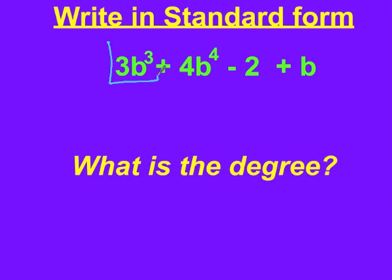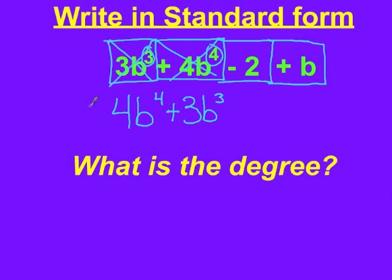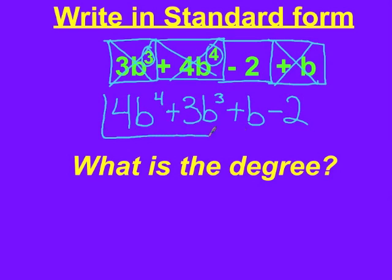Let's look at one more. Box the terms off and leave the adding or subtracting sign in front to determine if each is positive or negative. Our highest degree is 4, so we write positive 4b to the fourth. Our next highest is 3, so plus 3b cubed. Constants always go last, so the next term is plus b, and then the constant minus 2 goes last. Our polynomial in standard form has degree 4, since the biggest exponent is 4.